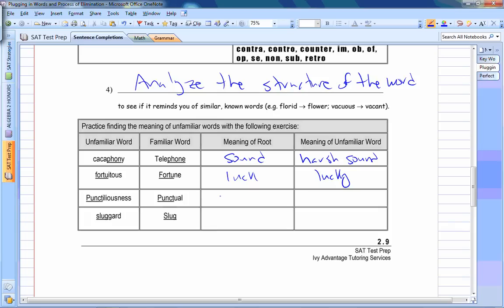Punctilious is punctual. Punctual means on time. Having punctiliousness means being precise. Sluggard, slug. A slug is a slow creature, like a snail. A sluggard is a lazy person. So these are little things you can do to resolve these vocab issues.